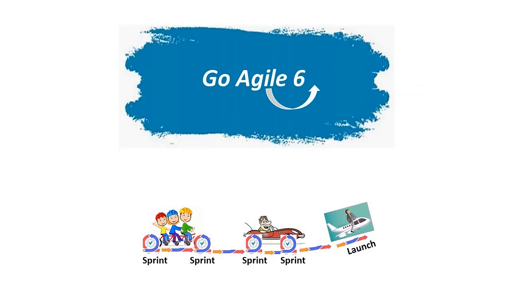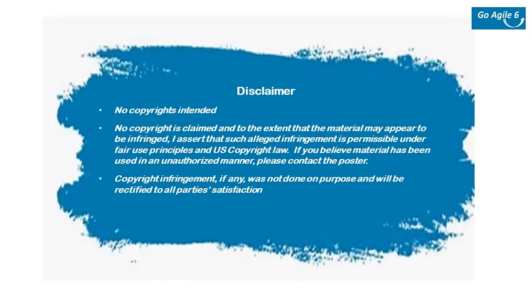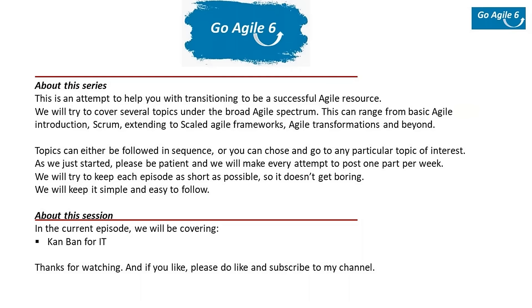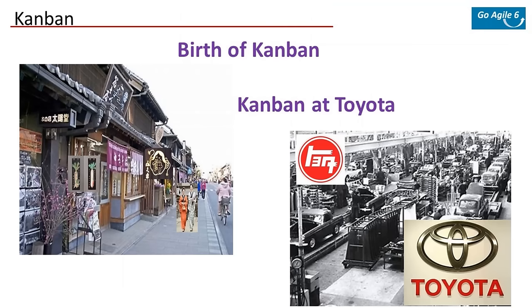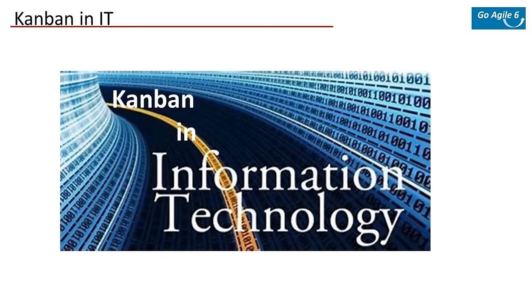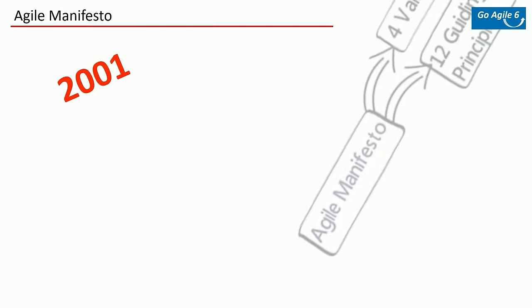Welcome back to Go Agile 6. Last time we started Kanban — we looked at the birth of Kanban and how it got adopted in the Toyota Production System. Today we will look at how Kanban found its way into IT and how it became one of the popular agile frameworks. Over time the Toyota Production System gained a lot of popularity globally, and project managers all over the world started trying it in different flavors. The biggest breakthrough came in the software industry — from 2001 onwards there were active discussions around Agile and the Agile Manifesto.